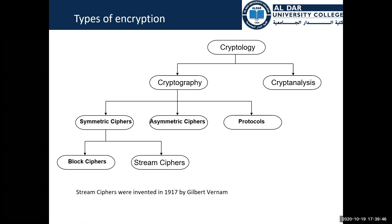Cryptology is divided into cryptanalysis — which means attacking or breaking ciphers — and cryptography — which means building and implementing ciphers. Cryptography is divided into three types: symmetric algorithms, asymmetric algorithms, and protocols. Protocols are used for tasks like exchanging keys, not for encryption/decryption directly. They are different from symmetric or asymmetric — they deal with key exchange and similar operations.